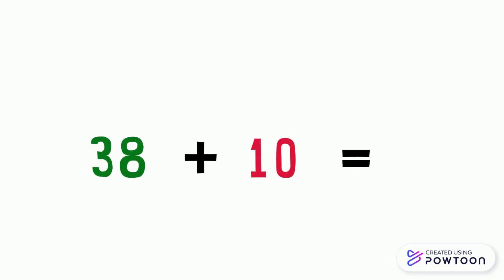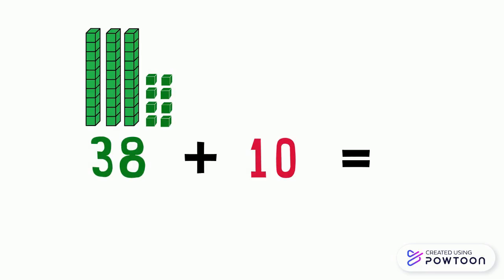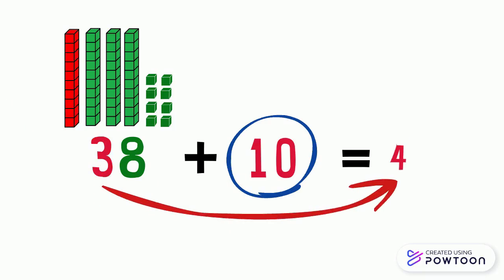Another example, 38 plus 10. The number 38 is made up of three 10s and eight ones. Then, add 10, we should add one 10 to the tens digit, which is 3. So, it becomes 4.